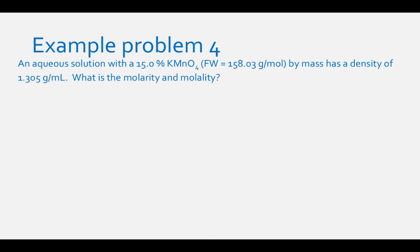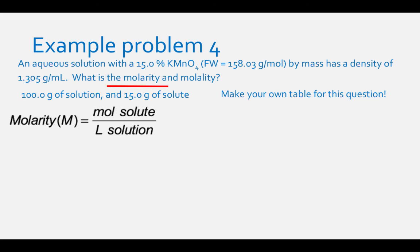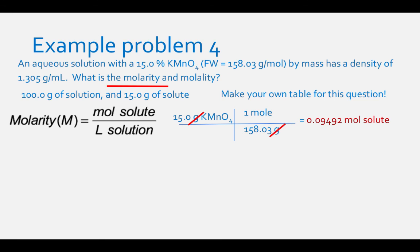The last example: an aqueous solution of 15.0% KMnO₄ by mass, with a formula weight of 158.03 g/mol and a density of 1.305 g/mL. Find the molarity and molality. Assume 100.0 grams of solution and 15.0 grams of solute. To find moles of solute, divide 15.0 g by 158.03 g/mol = 0.09492 moles of solute.